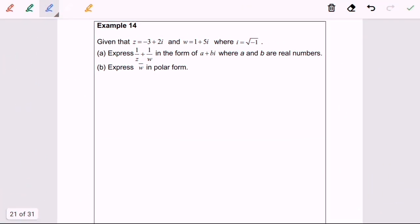For example 14b, express the conjugate of w in polar form. So in here, the conjugate for w will be equal to 1 minus 5i.